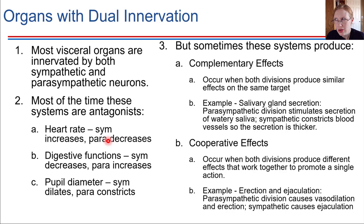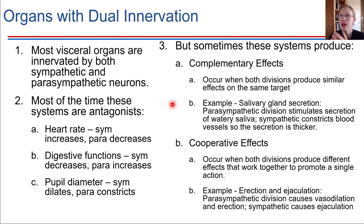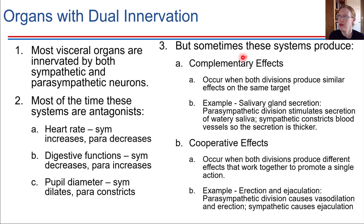As a final note, there are some situations where dual innervation can lead to complementary or cooperative effects. We tend to think of the sympathetic and parasympathetic divisions as antagonists, and they generally are — they do opposite things — but there are some exceptions where these two divisions actually work together to accomplish an overall goal in the body.